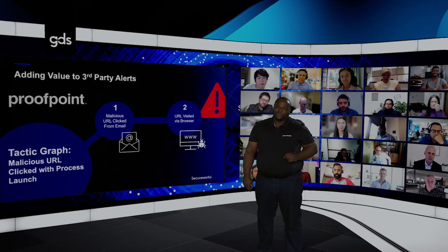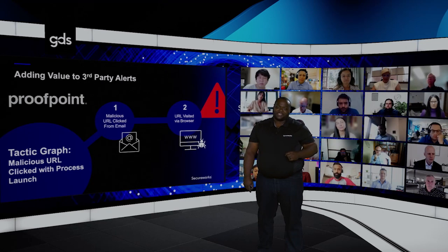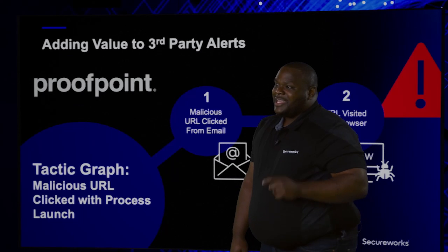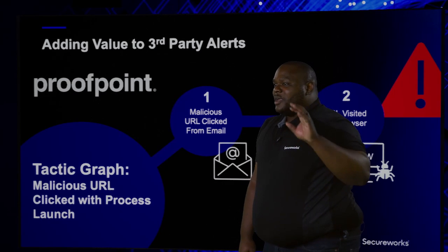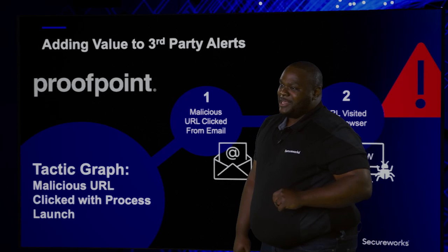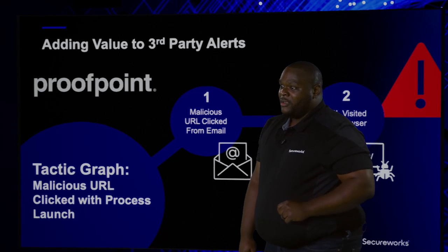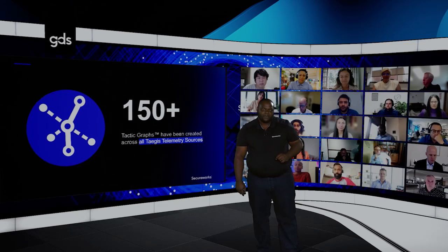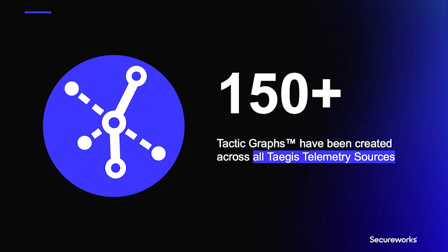Our telemetry isn't the only thing that benefits from Tacticraphs — we can also make Tacticraphs from our partner alerts as well. We can use Tacticraphs to provide added value to our customers wherever the alerts come from. We can confirm that once a user has clicked on a URL in an email, we see the process event for them visiting that URL via the browser. With over 150 Tacticraphs created and coverage across all of TAGIS's telemetry sources, we look forward to everyone experiencing the impact of Tacticraphs with our platform. I invite you to take a look at the TAGIS documentation to learn more about Tacticraphs.